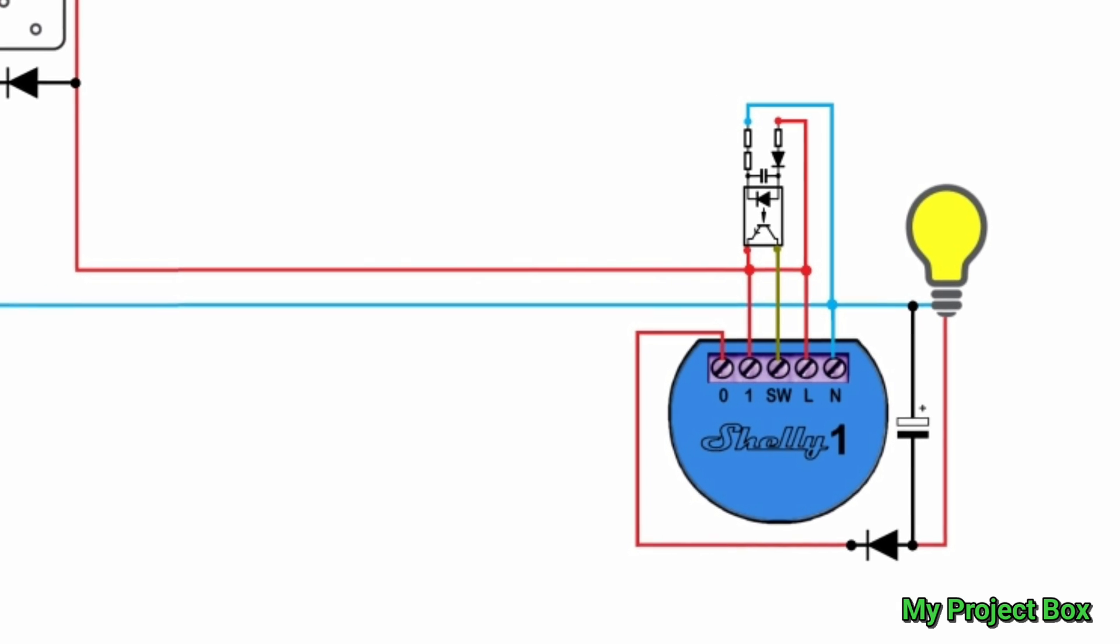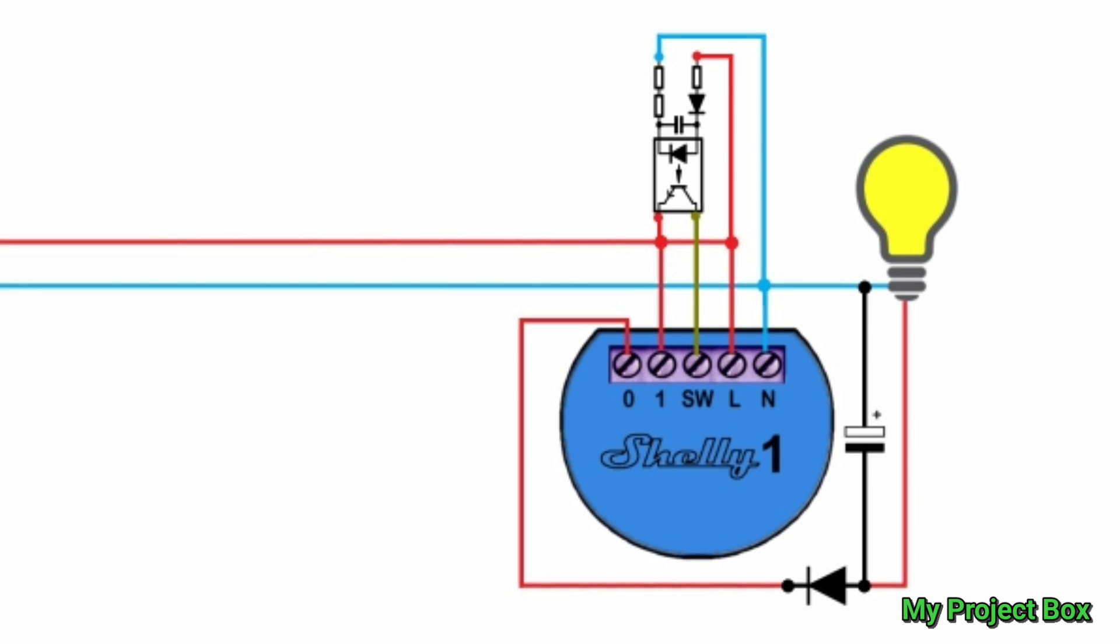So now that we have the optocoupler circuit creating a virtual switch signal at the Shelly One locally, let's focus on the LED light bulb. Now, many LED light bulbs can work on both AC and DC. And I've tested several of them. And some of them work fine on half-wave DC. But a lot of them flicker really badly on half-wave DC. So I've added a diode and a small capacitor to smooth out the ripple. And this completely eliminates the flicker that a lot of LED light bulbs generate on half-wave DC.